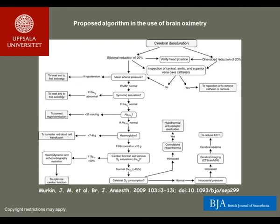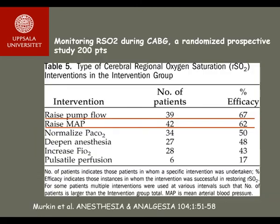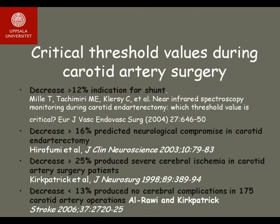The effectiveness of measures to correct decreases in saturation was demonstrated in a study by Merckham on patients undergoing coronary surgery. The most common interventions were to raise the pump flow or the arterial pressure. Studies on the use of NIRS during carotid endarterectomy found that a decrease of 12% in NIRS was an indication for shunt use, with other studies confirming cut-off values of decreases between 10 and 20% as important.